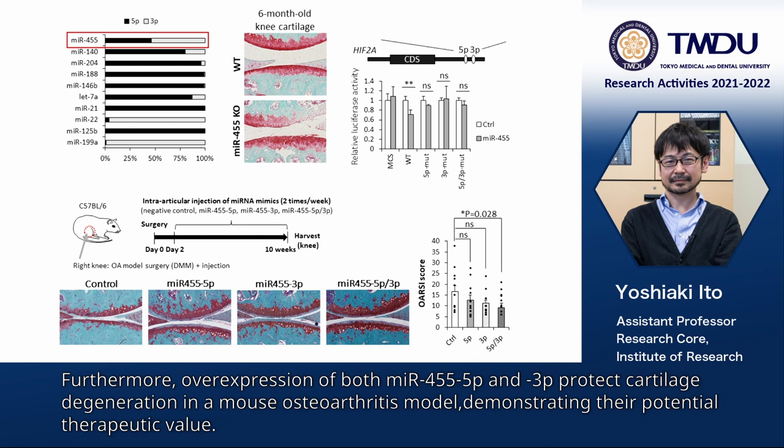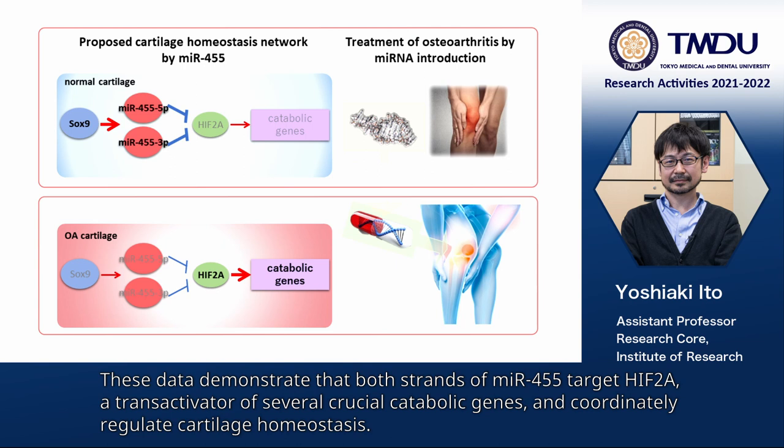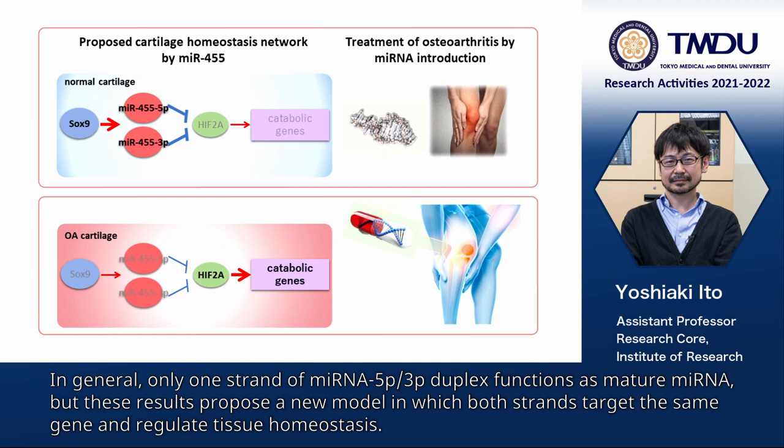Furthermore, overexpression of both MIR-455 5P and 3P protects against cartilage degeneration in a mouse osteoarthritis model, demonstrating their potential therapeutic value. These data demonstrate that both strands of MIR-455 target HIF-2α, a transactivator of several crucial catabolic genes, and co-ordinately regulate cartilage homeostasis.